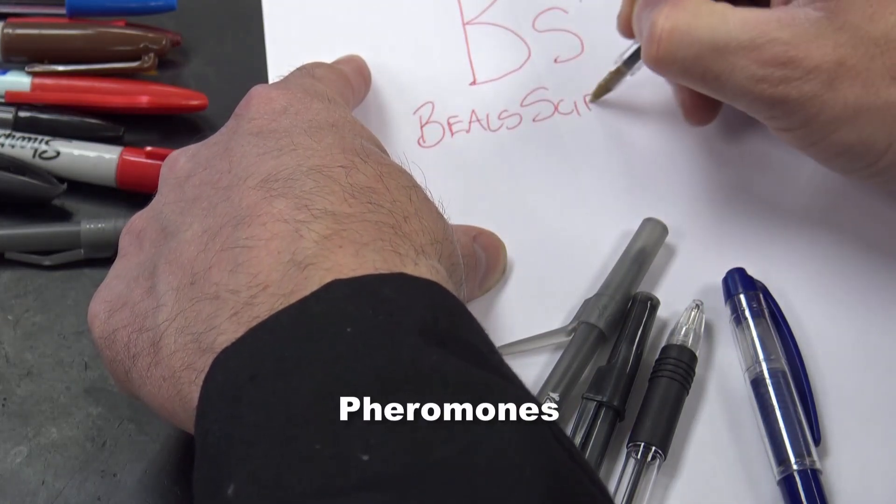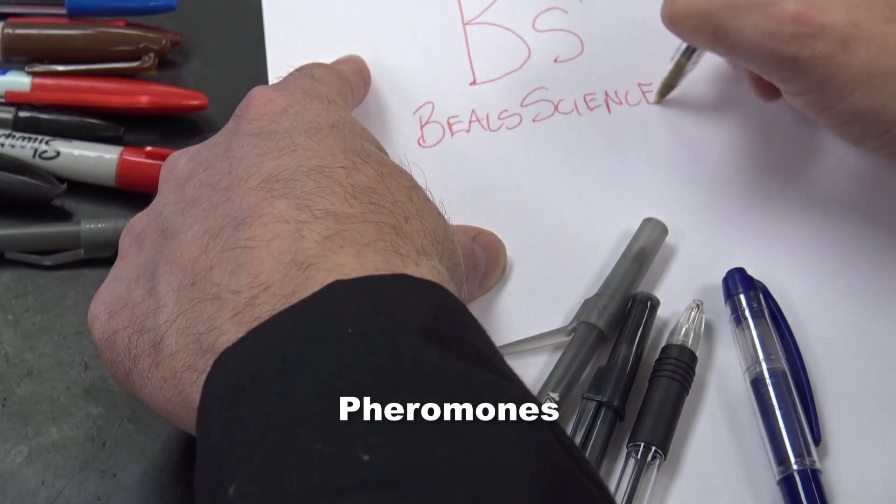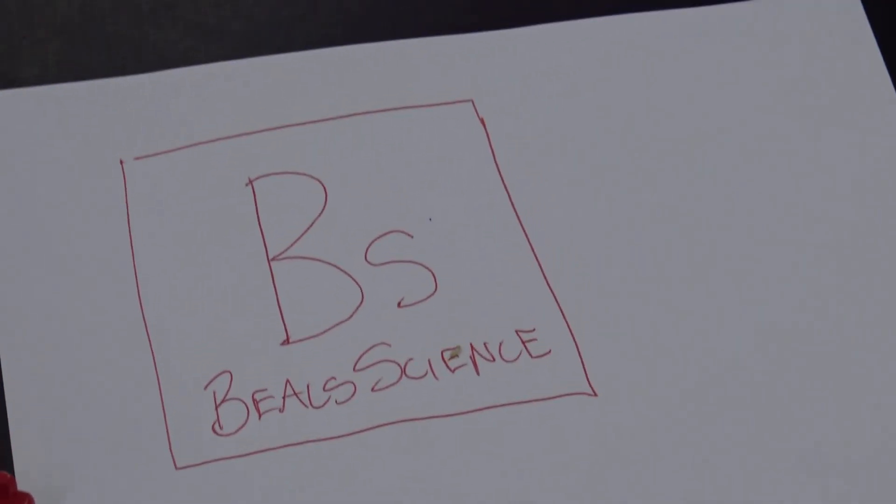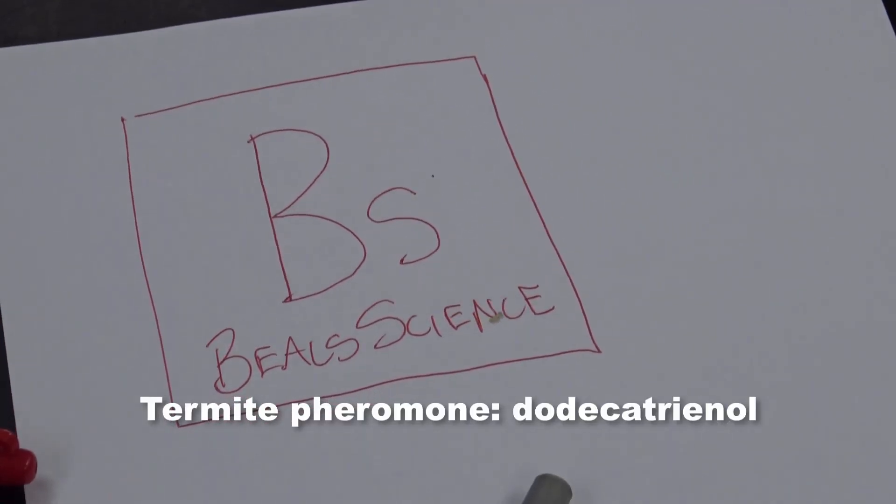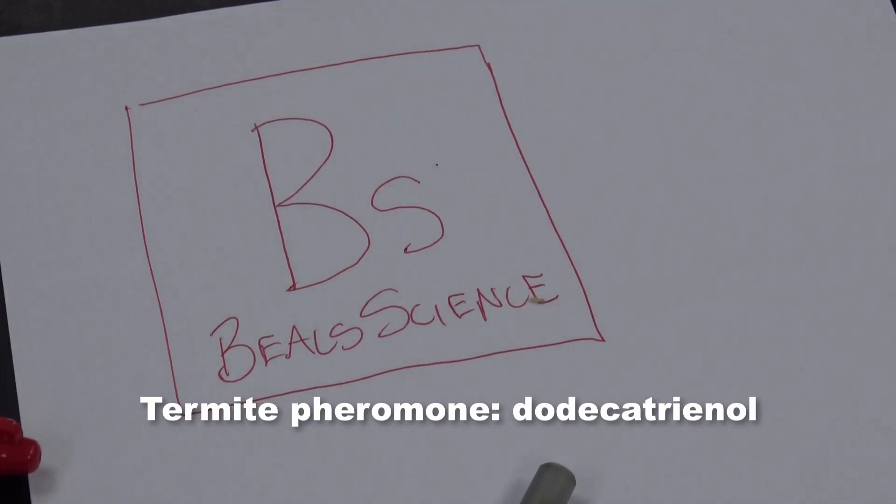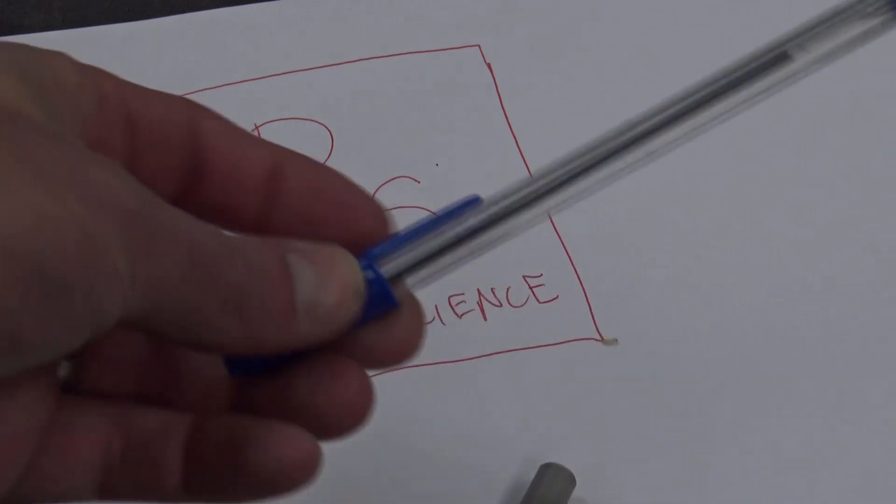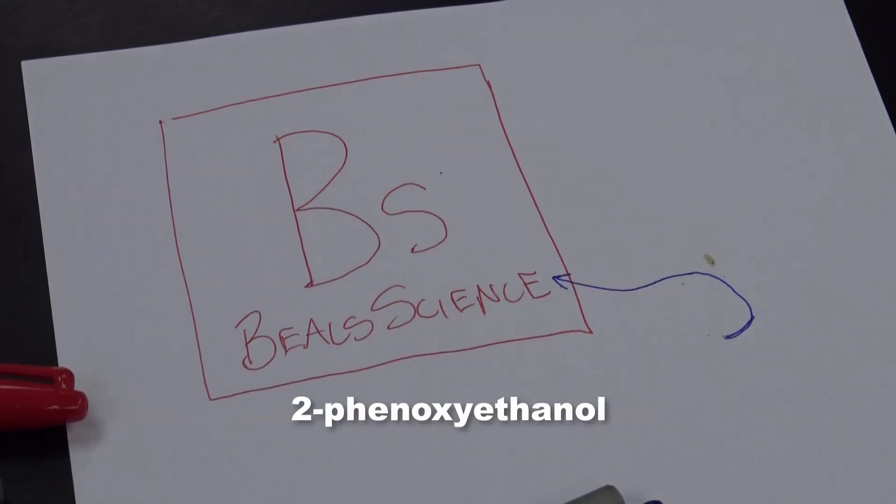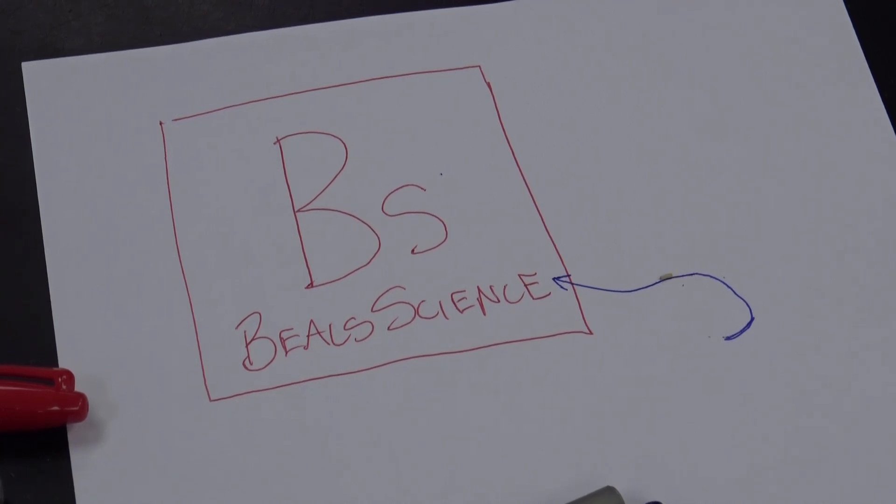Those antennae actually pick up something called pheromones. When termites find new sources of food, they leave pheromones behind so other termites can follow them. As it turns out, a lot of the pens we use on a daily basis have a chemical in them called 2-phenoxyethanol, which is the same as the pheromones left behind by termites.